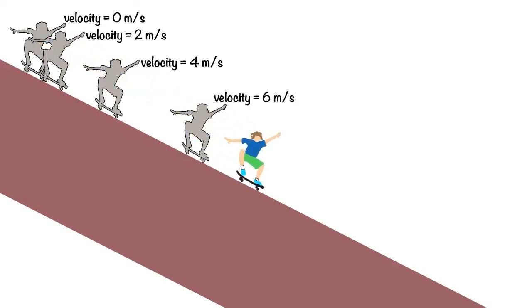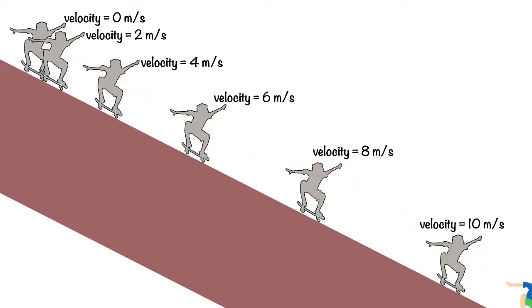A skateboarder traveling down a ramp starts from rest and accelerates as he travels down the slope. If we take a snapshot every second, we can see his velocity start at zero and increase steadily to 2, 4, 6, 8, and 10 meters per second.